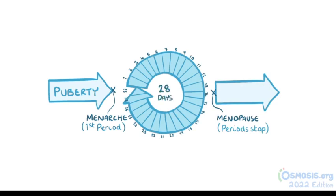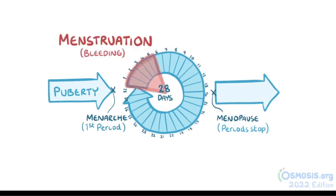Each menstrual cycle begins on the first day of menstruation, and this is usually referred to as day one of the cycle. Ovulation, or the release of the oocyte from the ovary, usually occurs 14 days before the first day of menstruation — in other words, 14 days before the next cycle begins.